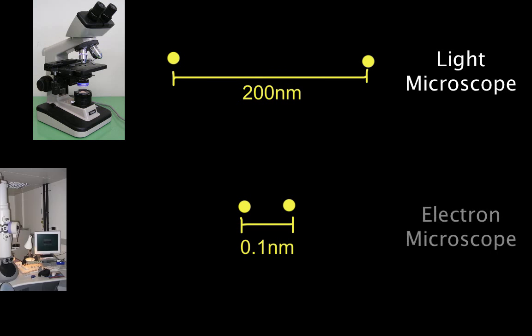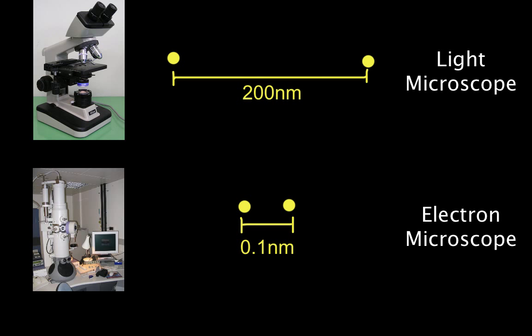But for an electron microscope, it can go much further than that, it has a higher resolution. It can tell apart two points that are just 0.1 nanometres apart.